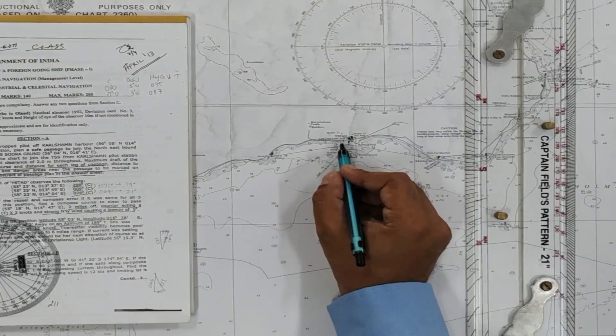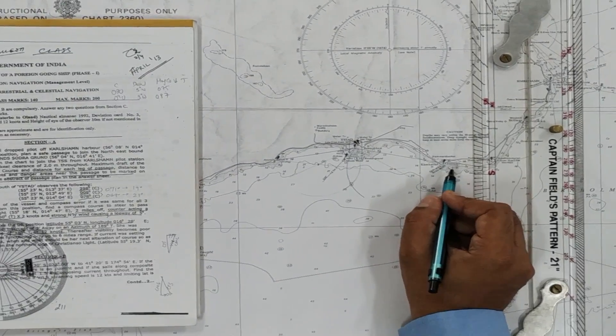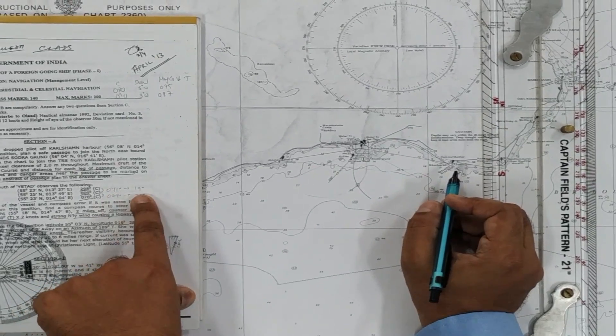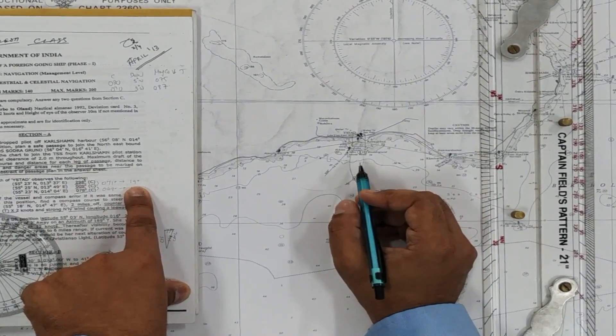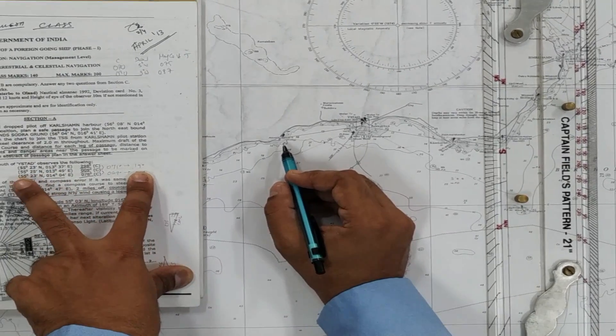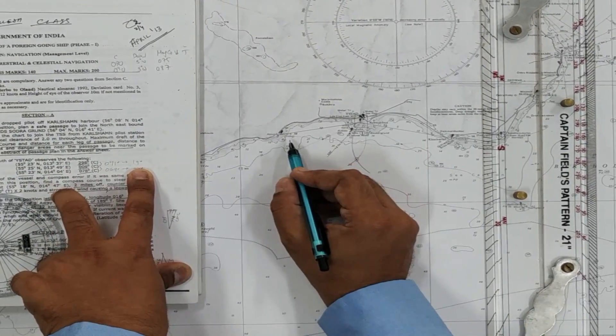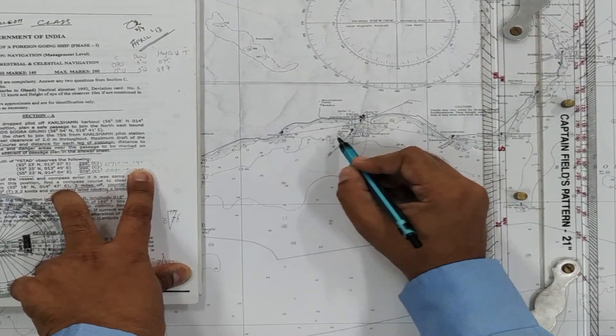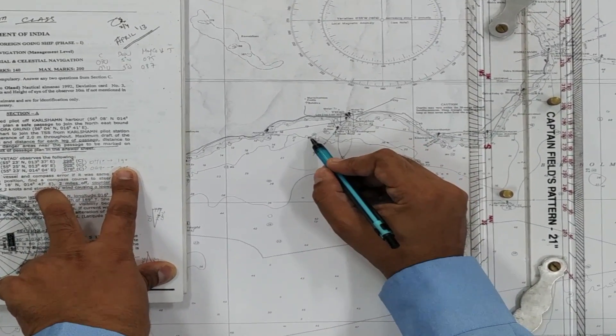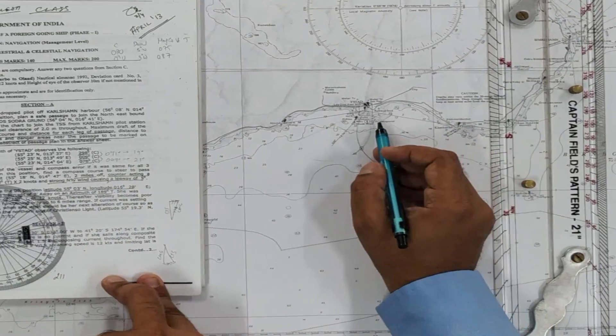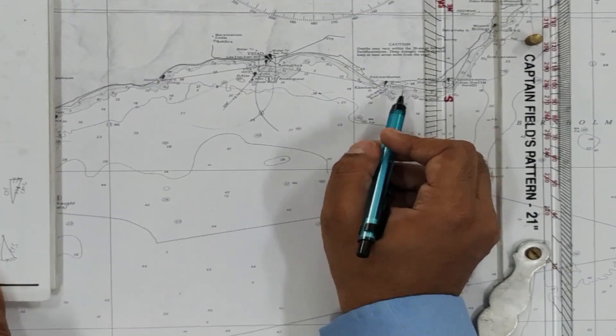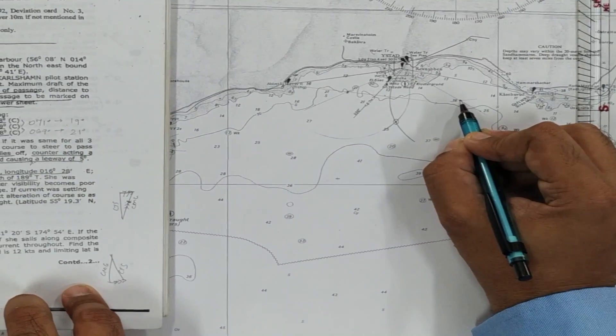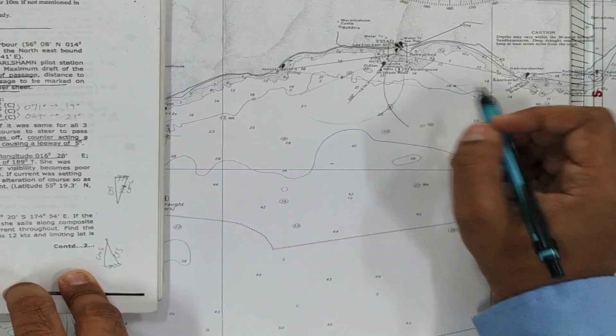As a recap, we have Abbekas, Weistad, and Kasebarga lights. The difference between Abbekas and Weistad was 071. 90 degrees minus that comes out to 19 degrees. Keeping the Abbekas and Weistad as a baseline, we draw 19 degrees and extend the line. From Weistad again towards Abbekas, we draw 19 degrees, and these two lines met at this point.